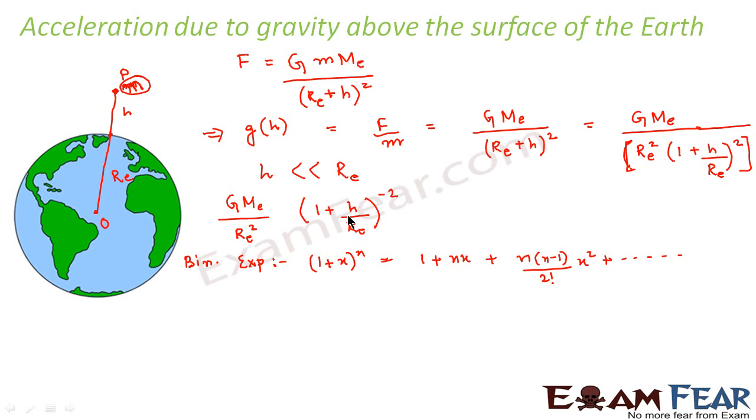So in this case, since h is very very less than r_e, we can expand this term binomially. But we will consider only the first two terms. We will neglect the higher terms. So expanding this binomially, what do we get? We get G M_e by r_e square. This we will leave as it is, and this will be 1 plus nx. What is n here? n is minus 2. So this will be 1 minus 2, and x is h by r_e.